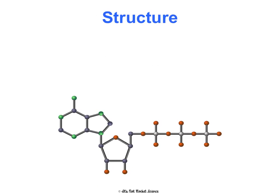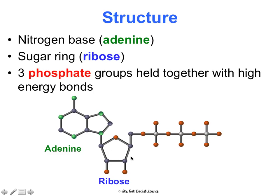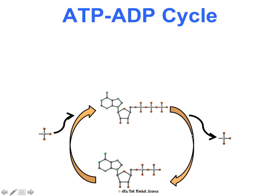Now let's look at ATP's structure. It's made of adenine, which is a nitrogen base. It's made of a sugar ring — specifically ribose. And then it's made of three phosphate groups. All of those are held together by very high-energy bonds. The majority of the energy in this molecule is concentrated in the bond between those phosphate groups, with a little less energy further along and less throughout.